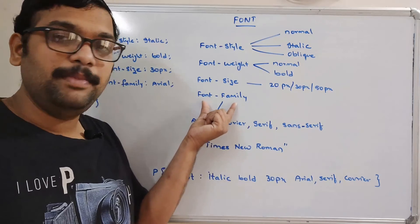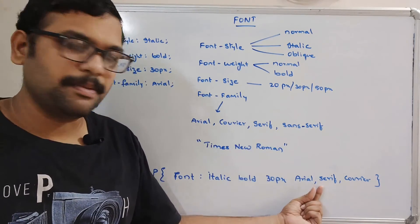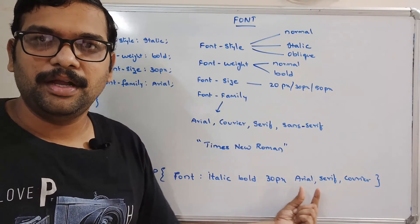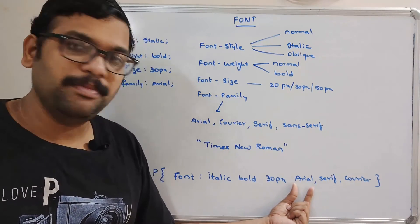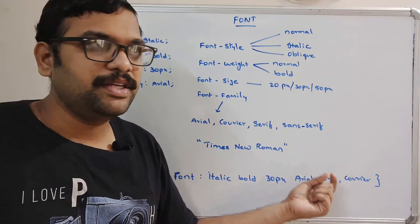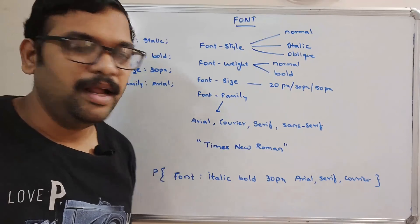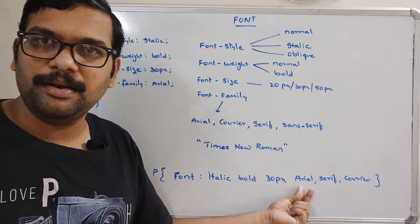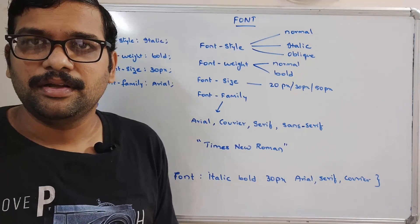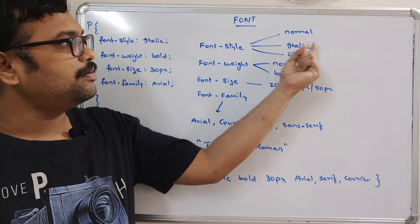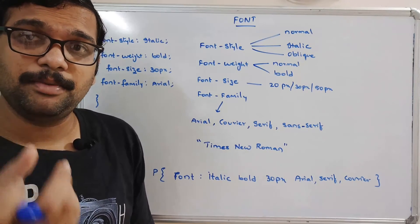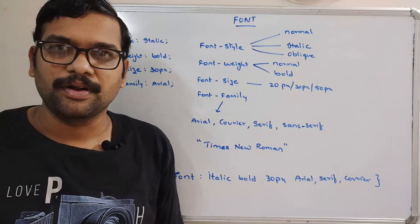In the font family part of the shorthand, you can give multiple names with comma separation. Depending on browser compatibility it will apply one font name, following the order. If Arial is not supported it moves to serif, then to the next. Now we'll execute the HTML file demonstrating each font property.